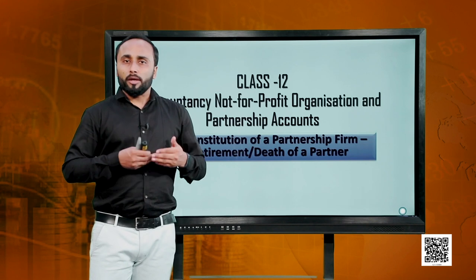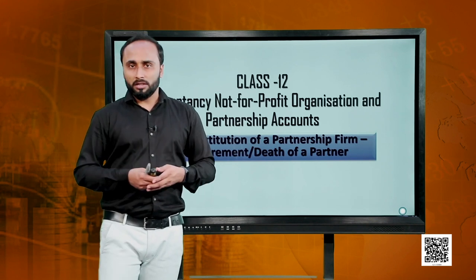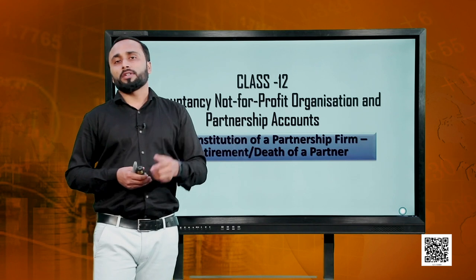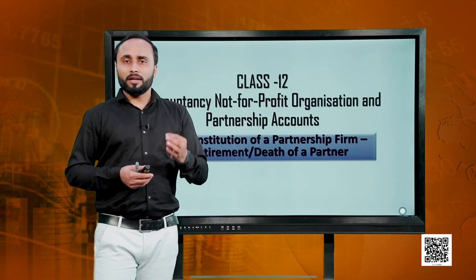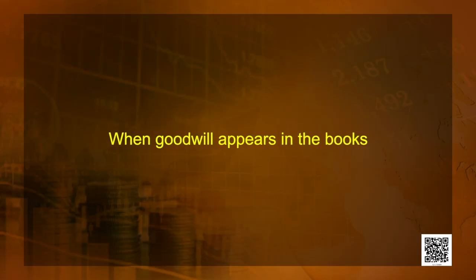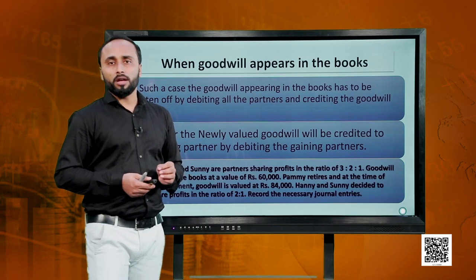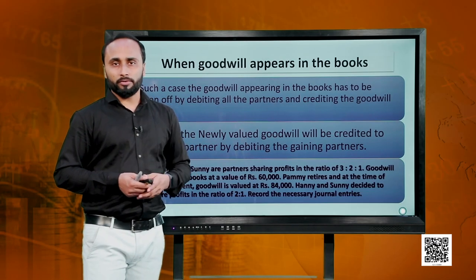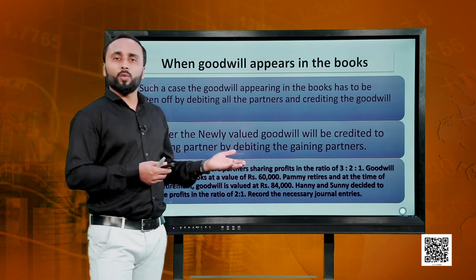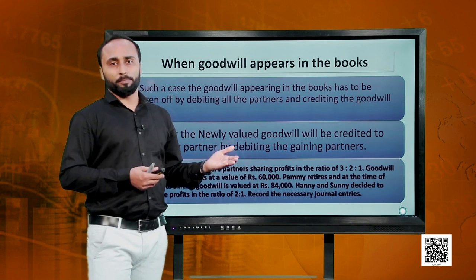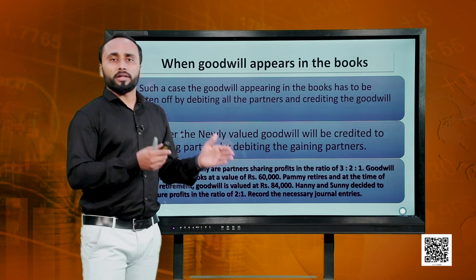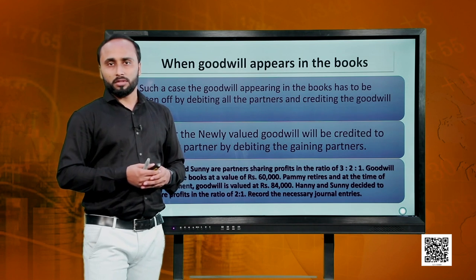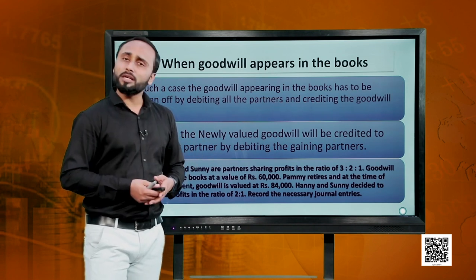Today we will resume the lecture by assuming what if there was an existing goodwill. In case there is an existing goodwill appearing in the books, we first of all have to write it off. We write off the goodwill by debiting all the partners in their old ratio and crediting the goodwill account. The logic is very simple.